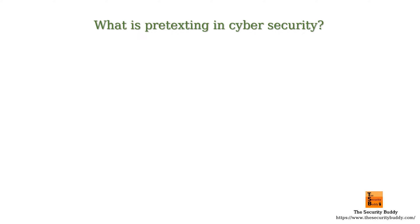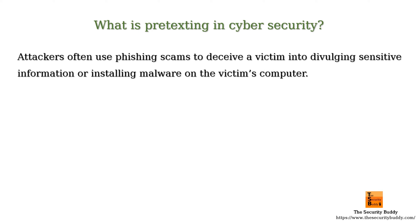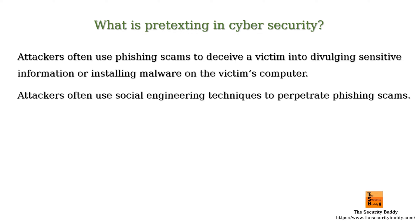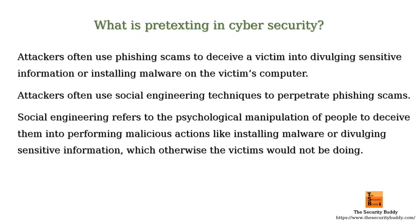Attackers often use phishing scams to deceive a victim into divulging sensitive information or installing malware on the victim's computer. Attackers often use social engineering techniques to perpetrate phishing scams. Social engineering refers to the psychological manipulation of people to deceive them into performing malicious actions like installing malware or divulging sensitive information, which otherwise the victim would not be doing.